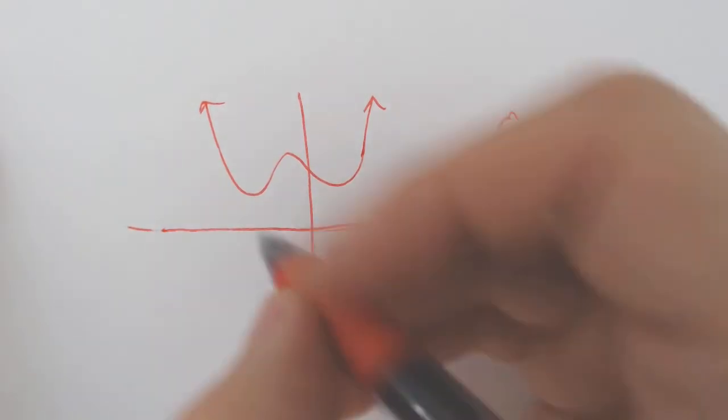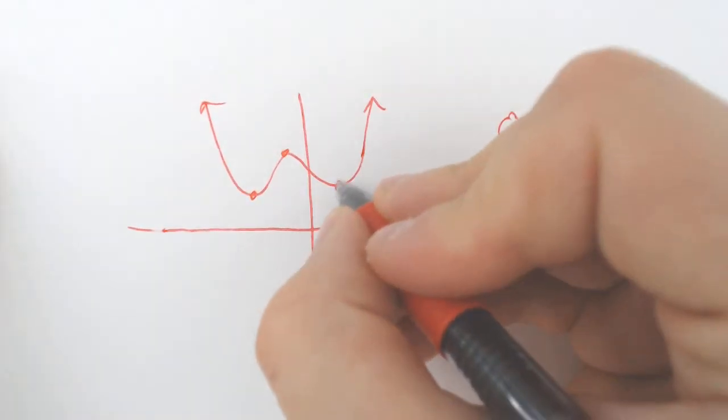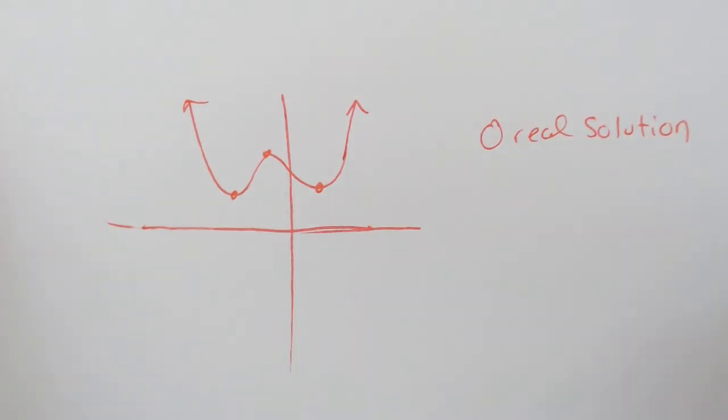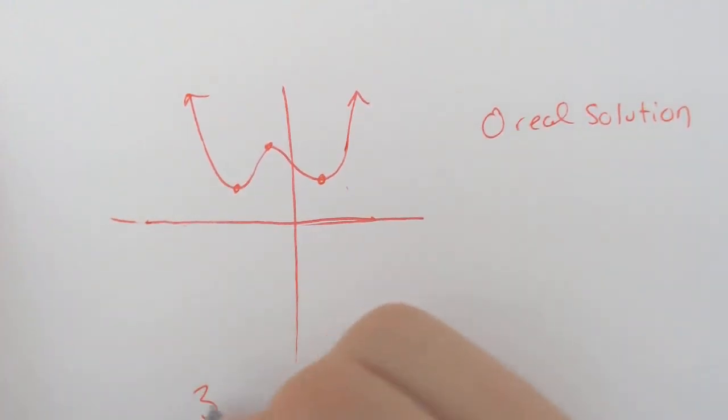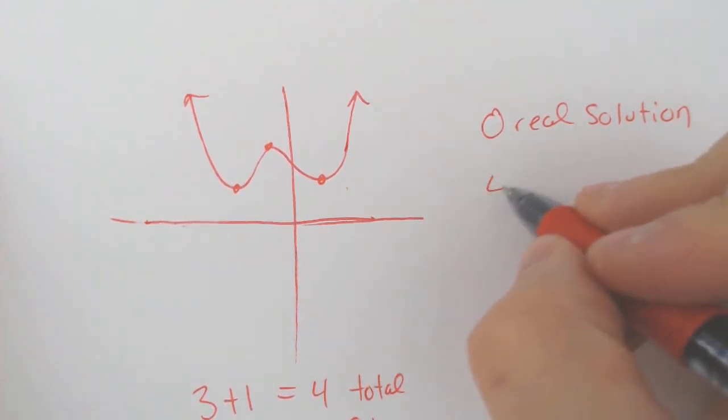And if we count up one, two, three, one, two, three, plus one makes four total zeros or total solutions, we must have four imaginary.